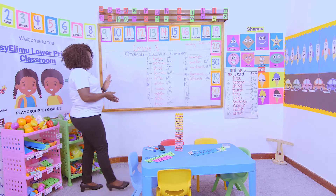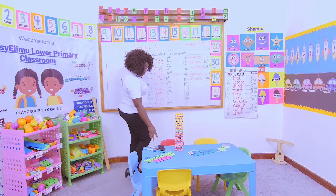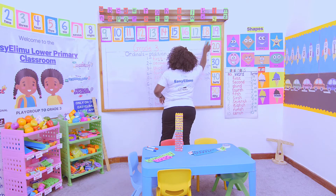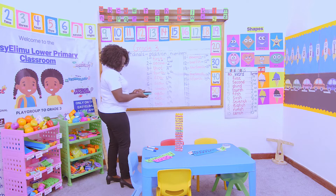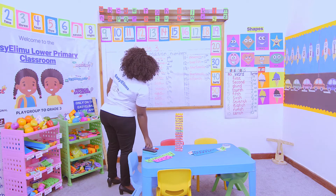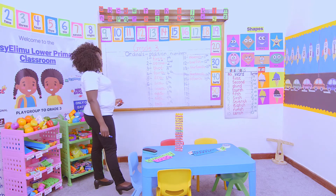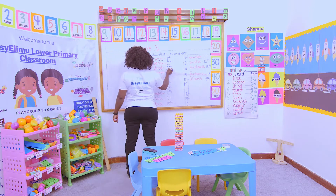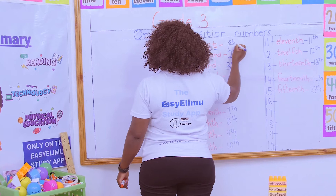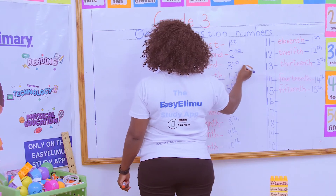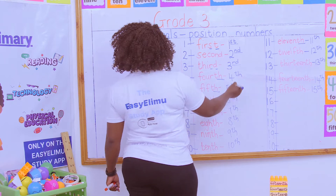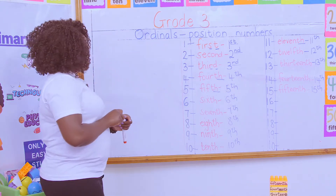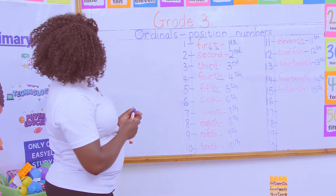We are still on ordinals, but we are almost done with these. Remember, we did ordinals up to number 15, and we are saying all these numbers look alike, apart from the first, second, and third, which have different letters at the end. The first has ST, the second has ND, and the third has RD. But all the others have the same — TH, TH, TH, TH, TH.